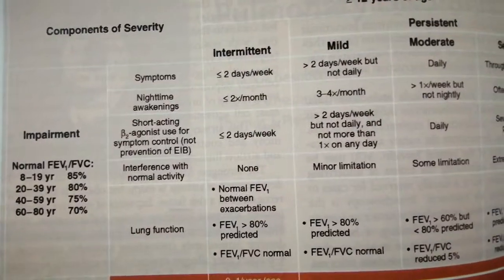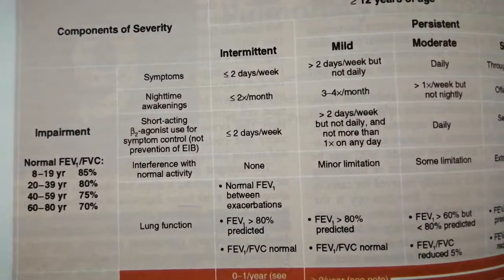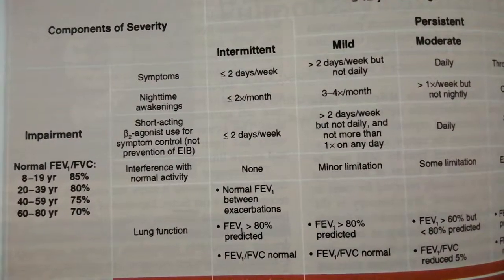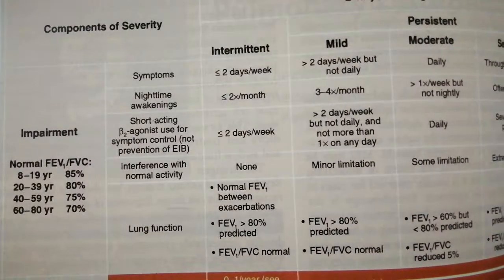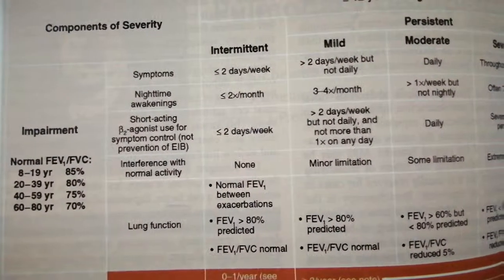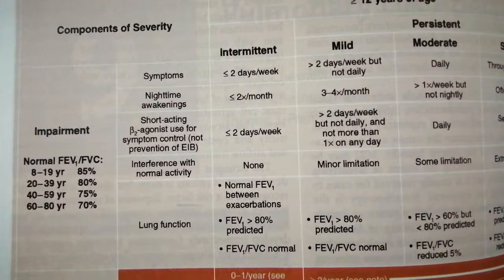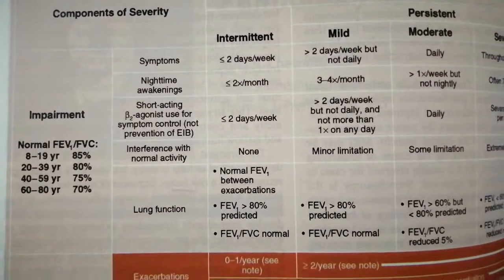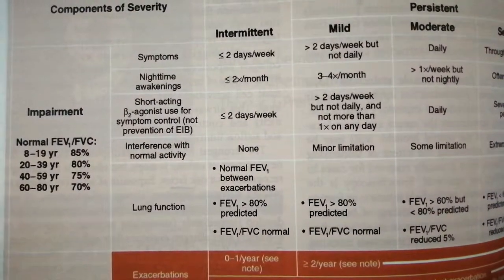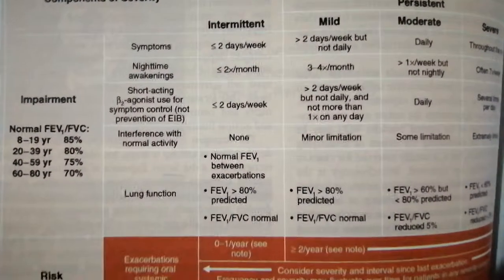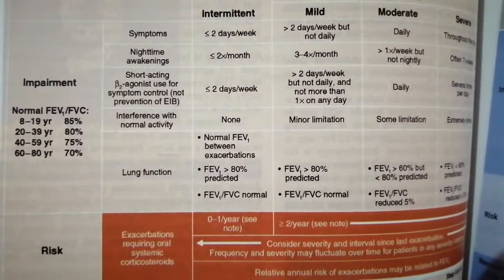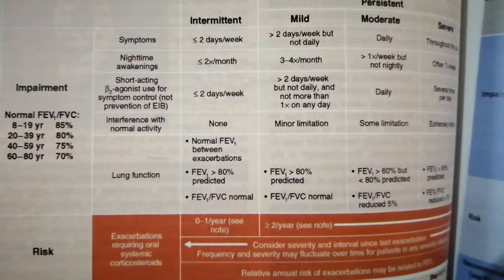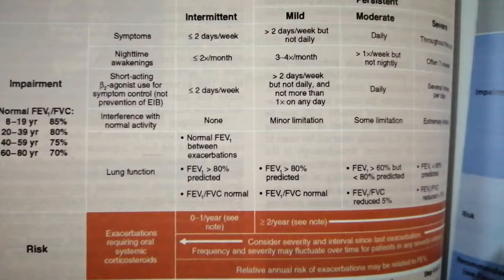Third is the use of beta-agonists — most commonly in our setup we use Ventoline. Fourth is how it is interfering with your normal activity. Fifth is the lung functions, and the risk factor — that is how many times you are using systemic corticosteroids.